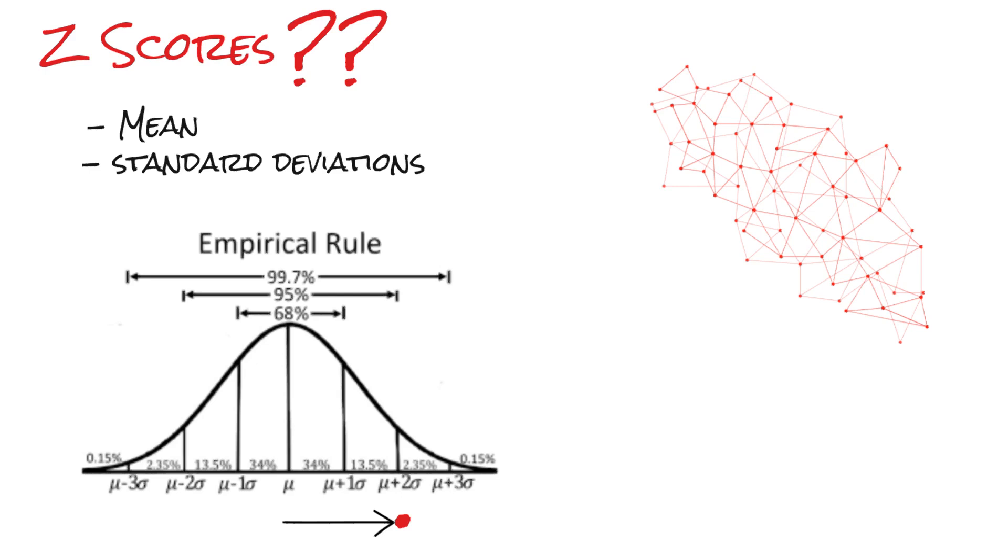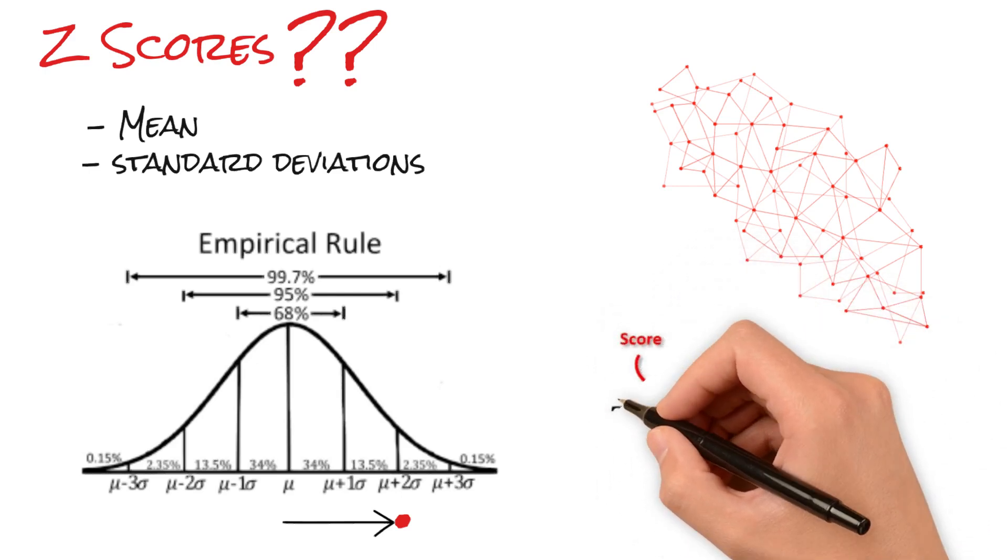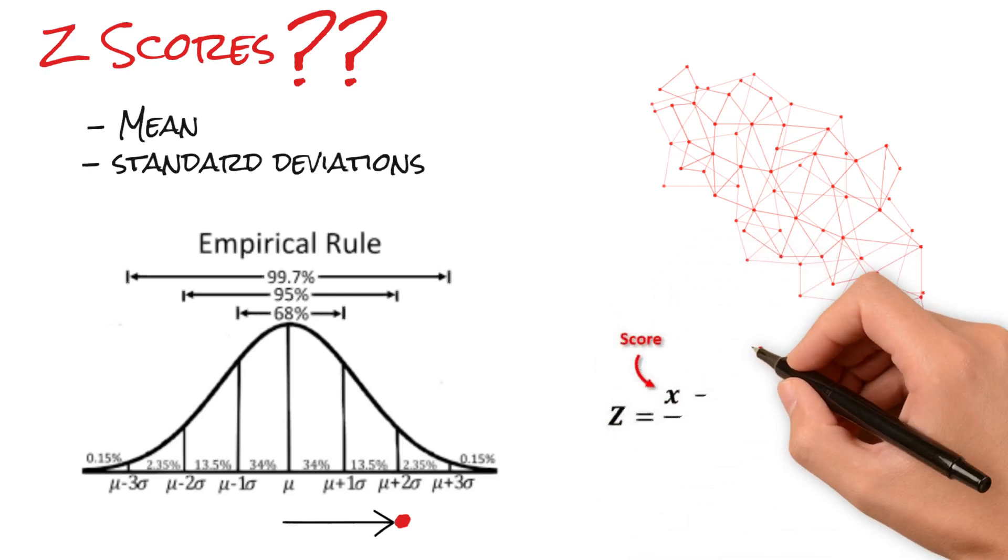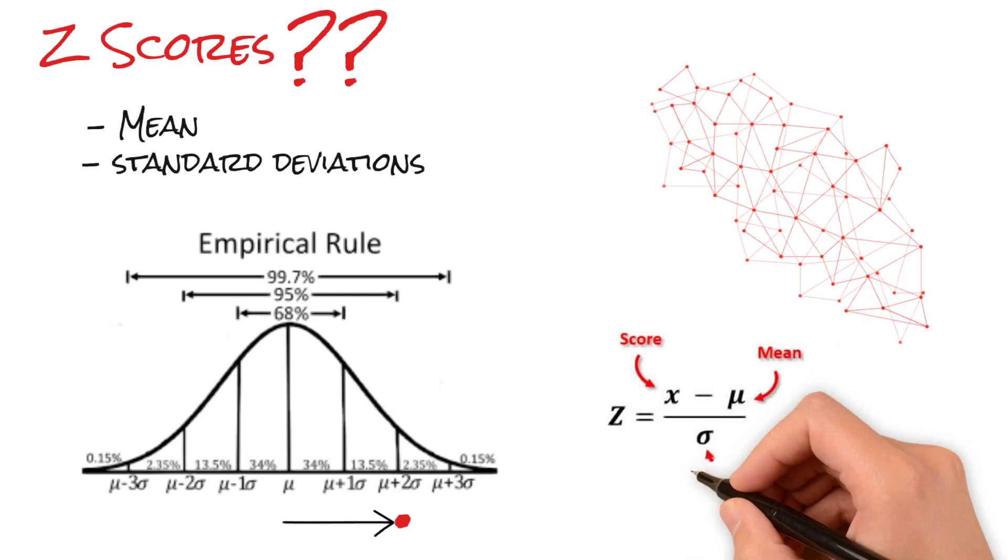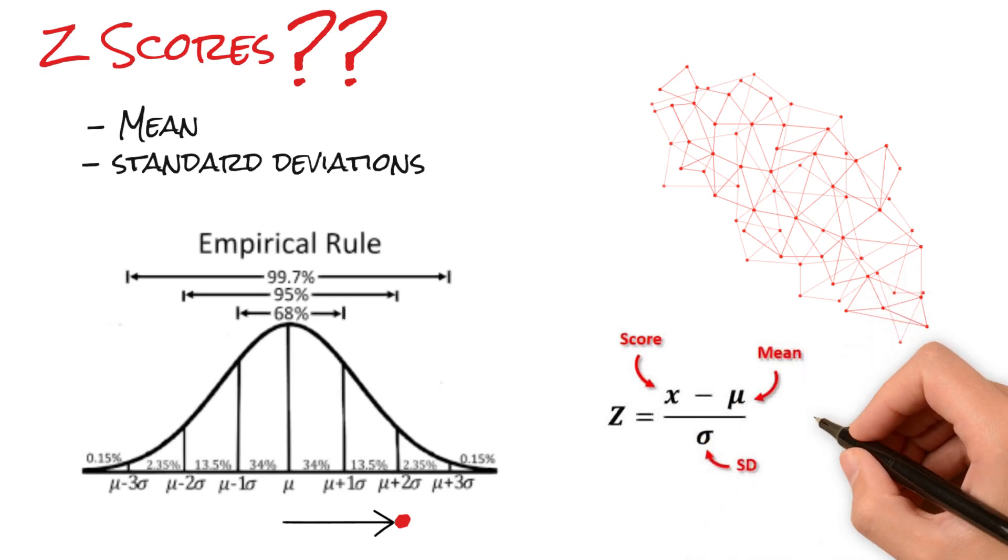The formula for calculating a Z-score is straightforward. It's the data point minus the mean divided by the standard deviation. If x represents the data point, mu is the mean, and sigma is the standard deviation.